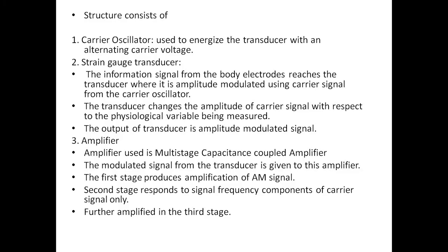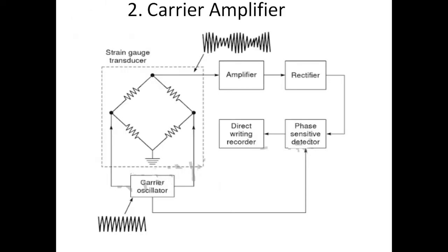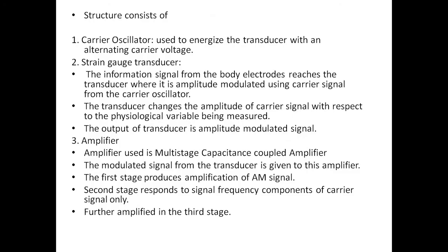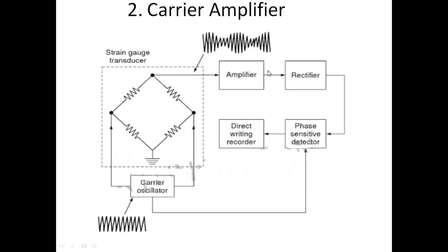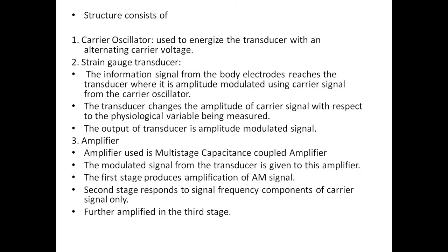Next is the amplifier stage. Here a multi-stage capacitance coupled amplifier is used. The modulated signal from the transducer is given to this amplifier. The first stage produces amplification of the AM signal, the second stage responds to the signal frequency component of the carrier signal only, and this is further amplified in the third stage — a multi-stage capacitance coupled amplifier.